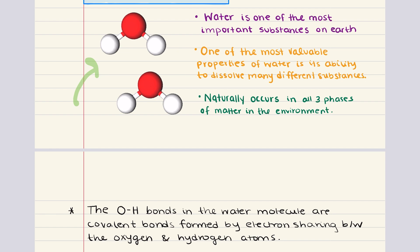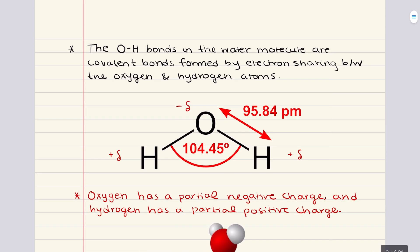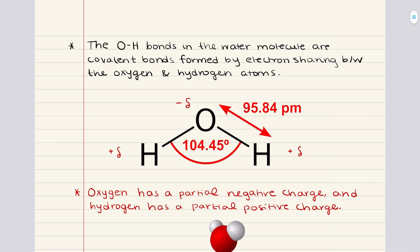Now, to understand this, we need to consider the nature of water. Liquid water consists of a collection of H2O molecules. Now, an individual H2O molecule is bent-shaped or V-shaped with this hydrogen-oxygen-hydrogen angle being approximately 105 degrees.